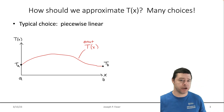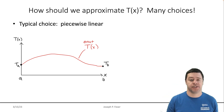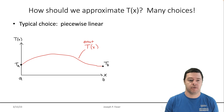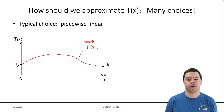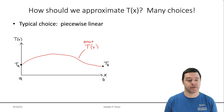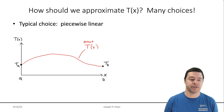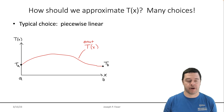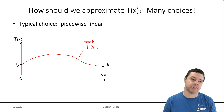How should we approximate this temperature profile? There are actually many choices, and this is where the finite element method gets very complicated sometimes. You can approximate it any way you want, as long as it has n degrees of freedom. But for the simplest finite element codes that most people work with on a daily basis, that choice is piecewise linear.